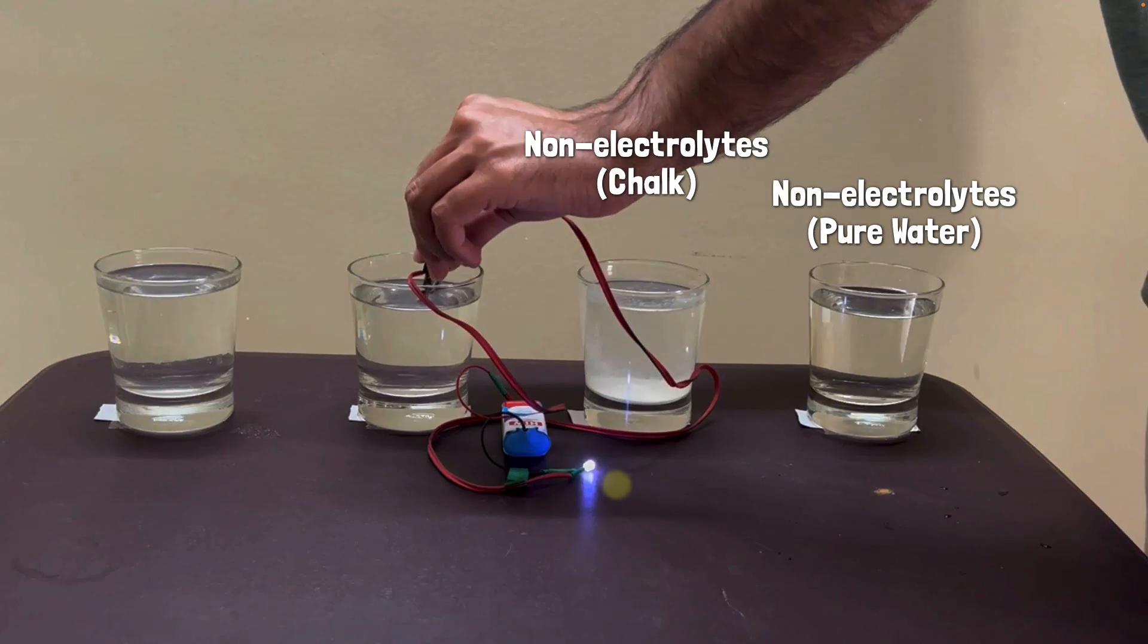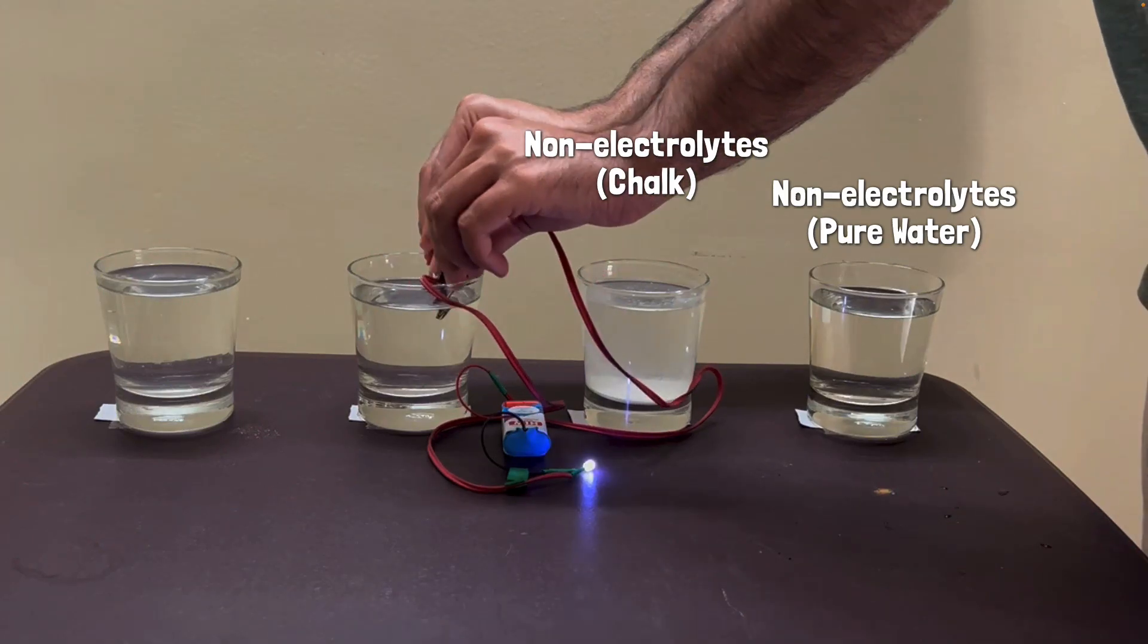In the third one, we actually do see the bulb glowing, but it's a little fainter than what we will get in the fourth one. We saw that earlier. So this means we are dealing with electrolytes, but because it's fainter compared to this one, we can conclude that these are weak electrolytes. And it is because I actually put vinegar over here. So it partially breaks into charged particles.